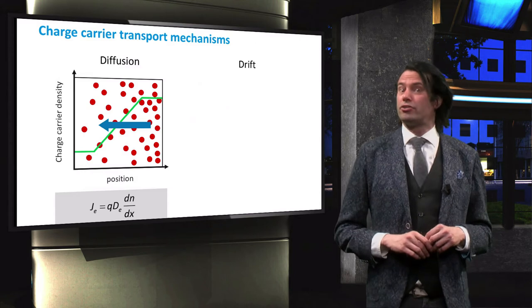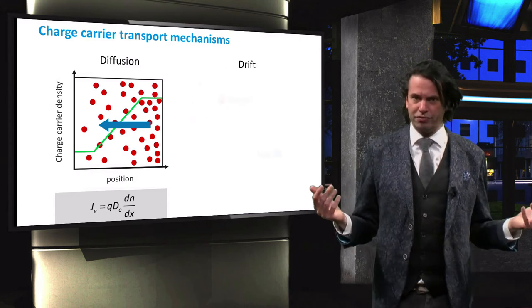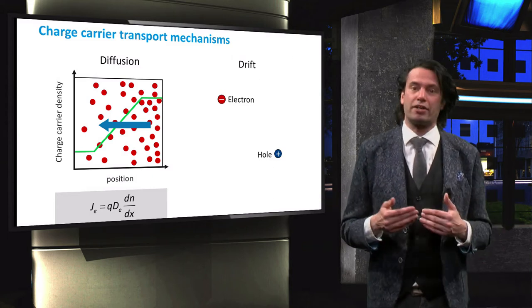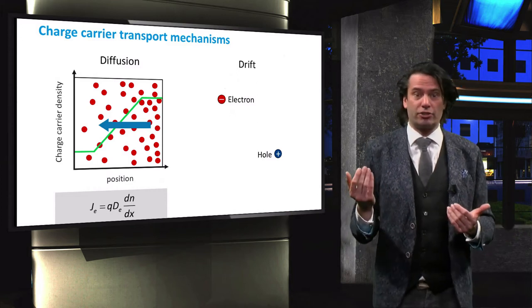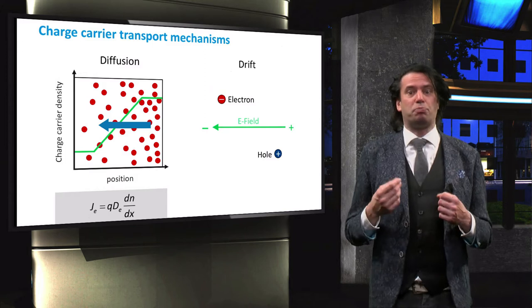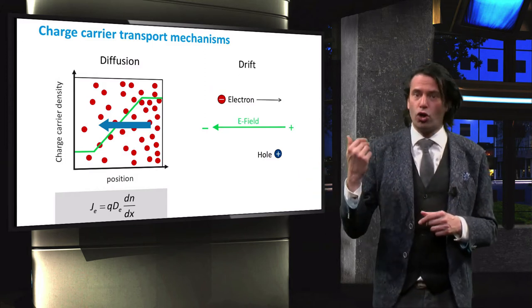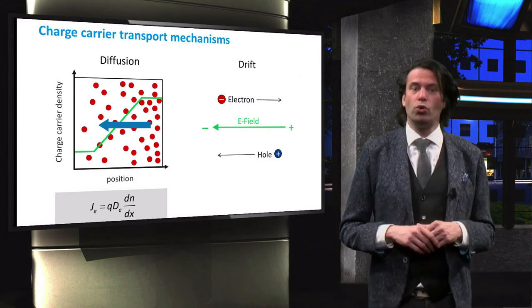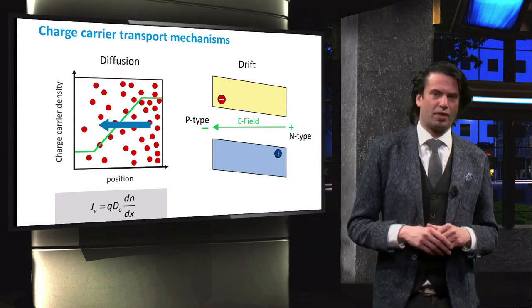The second charge carrier transport mechanism in solar cells is drift. Drift is charged particle motion in response to an electric field. Basically, if a negatively charged electron is placed in an electric field, it will experience a flux in the opposite direction of the field, towards the positive end.